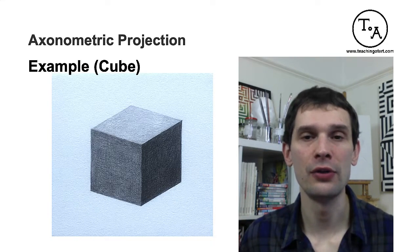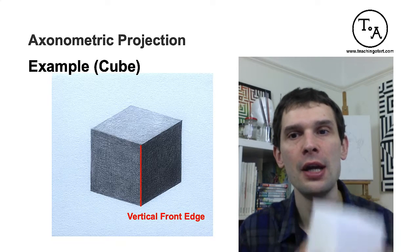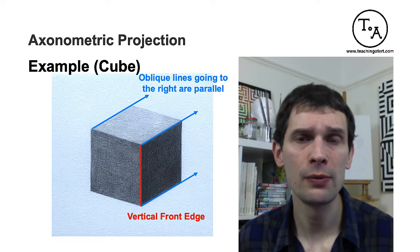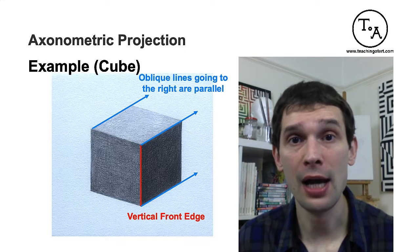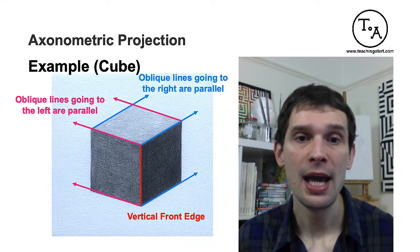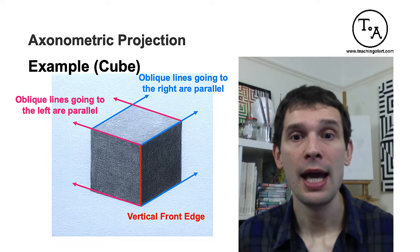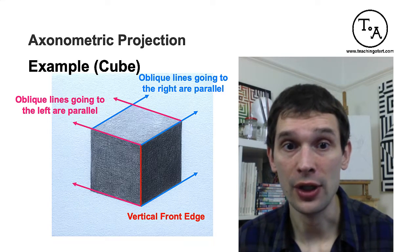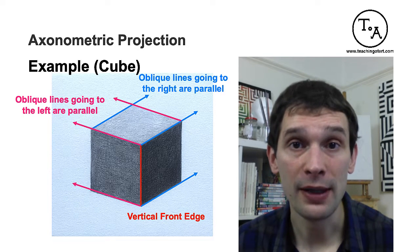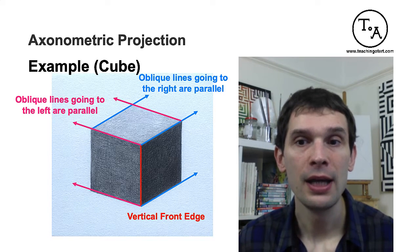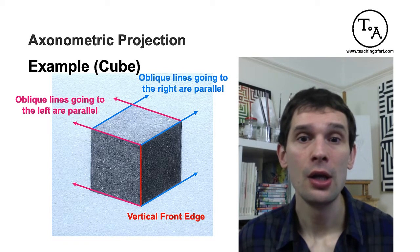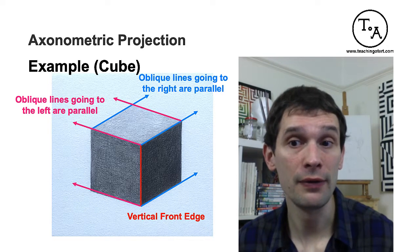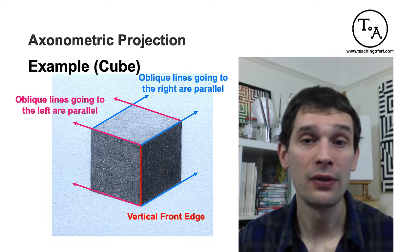When you draw an object in axonometry, you start with drawing the edge first because the edge is closest to the viewer. Then all the oblique lines going to the right should be parallel to each other, and all the oblique lines going to the left should be parallel to each other — that's what makes it a parallel projection. In other words, the edges are neither converging nor diverging. It is a non-perspective projection, so we feel depth in our drawing but it is not photorealistic. You can choose the angles under which the left and right oblique lines are parallel, and that determines the type of axonometric projection.